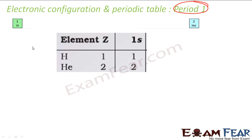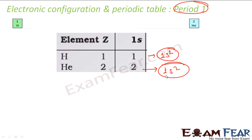Let's understand period 1. Period 1 has two elements: hydrogen and helium. For hydrogen, the electronic configuration is 1s1, and for helium it is 1s2. So in both cases, the maximum value of n is 1, so it is period 1. Please note, period 1 has only two elements.